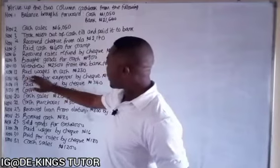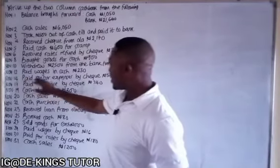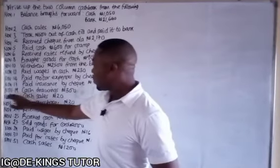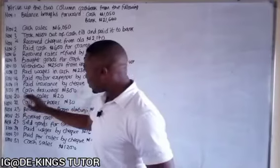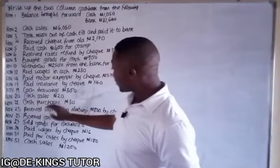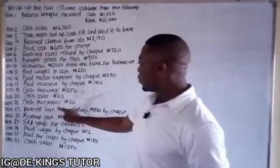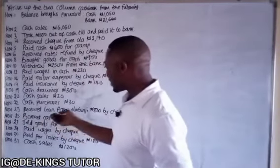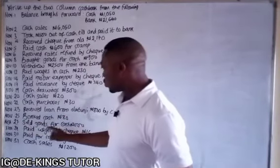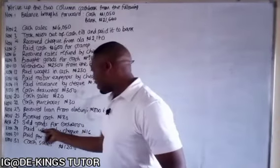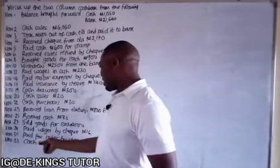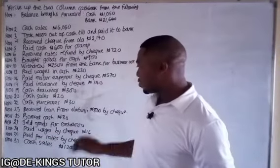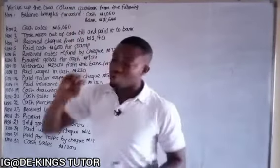November 12 — paid wages in cash 2,015 euro. November 12 — paid motor expenses by check 517 euro. November 17 — paid insurance by check 740 euro. November 19 — cash drawings 300 euro. November 20 — cash sales 20 euro. November 22 — cash purchases 13 euro. November 23 — received loan from Olatunji 800 euro by check. November 25 — banked cash 800 euro. November 27 — sold goods for cash 2,000 euro. November 29 — paid wages by check 16 euro. November 30 — paid for rates by check 180 euro. November 31 — cash sales 1,200 euro.